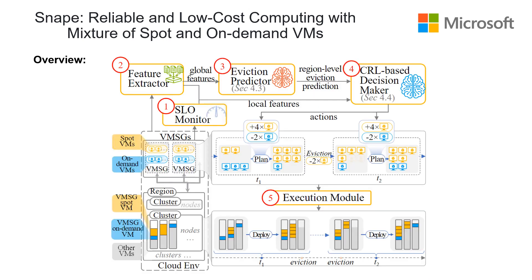This is the overview of SNAP. It can manage multiple VMSGs simultaneously and contains five modules. The SLO monitor tracks the availability of each VMSG and checks if the SLO is violated. The feature extractor gets features from the cloud system in both global and local aspects. The global features are fed into the eviction predictor to predict the region-level eviction rates in the next time steps. The global prediction is long-term and trained on historical data, acting as guidance in the constrained reinforcement learning decision-maker. Finally, the plan is executed to add or remove Spot or On-Demand VMs.